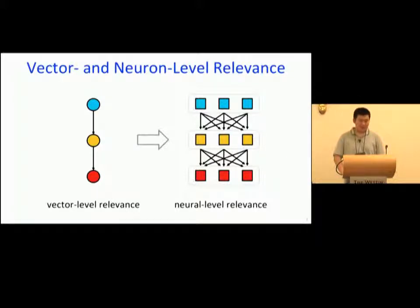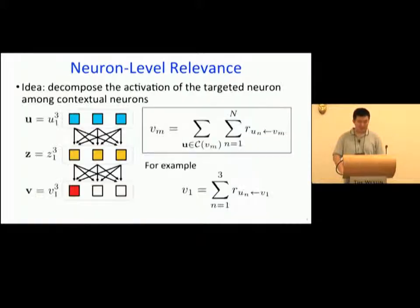Unlike image classification, the basic unit of MT is a word vector rather than a pixel. But the neuron is the basic unit of LRP. Therefore, we can distinguish between vector and neuron level relevance. To calculate neuron level relevance, the basic idea is to decompose the activation of the targeted neuron among contextual neurons.